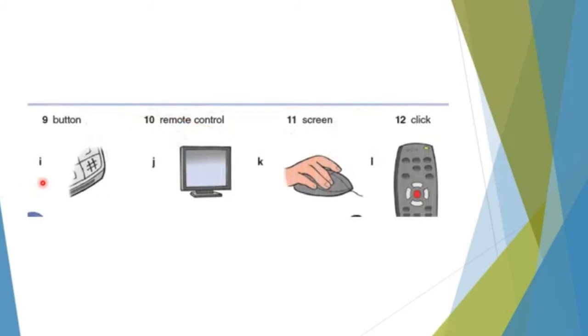Picture I. Button. Picture J. Screen. Now, K. Sorry. I'm sorry. Here I mixed. I made L before K. L. Remote control. And K. Click.